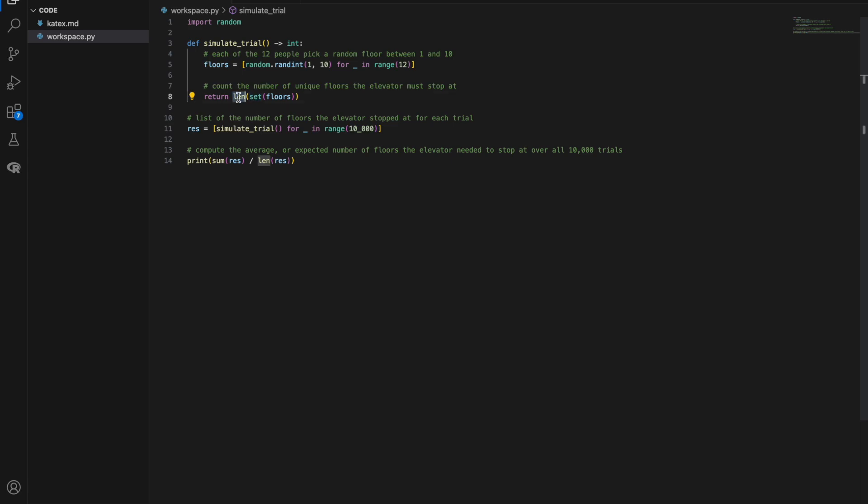So then 10,000 times, we simulate this trial and add it to this list result. And we then compute the average of this list and divide it by the total number of entries. And theoretically, we should be getting a value around 7.17. That is the expected value of S that we came up with when solving the problem with probability theory. So let's run it, see how far we get.